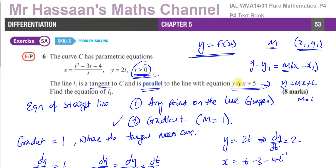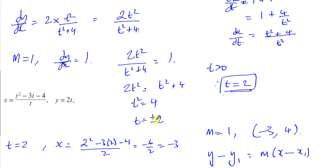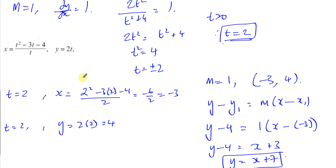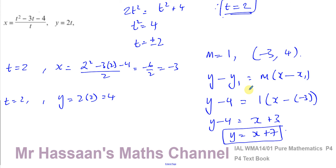So that's how we answered this question. We used the fact that the gradient is 1 to find the gradient of the tangent, and also to find the point where the tangent hits the curve — by setting dy/dx equal to 1, finding t equals 2, substituting to get the x and y coordinates, and then finding the equation of the tangent.